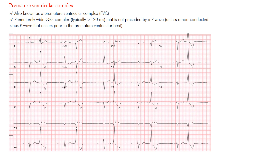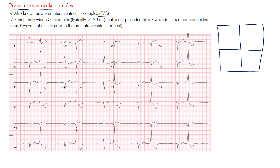Let's get started. Premature ventricular complexes, or PVCs — also known as ventricular premature complexes. As the name implies, you have a complex occurring early, premature, and originating from the ventricles.